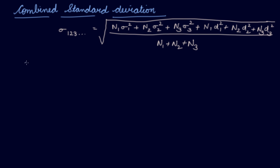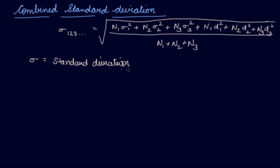This is your standard deviation of each series. If it is the 1st series it will be sigma 1, if it is the 2nd series it will be sigma 2, if it is the 3rd series it will be sigma 3. You have to take the square of the standard deviation.